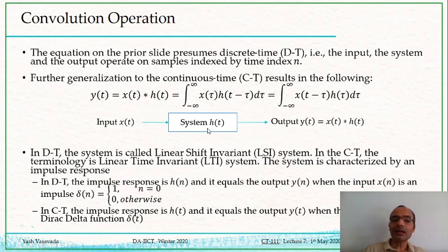Okay, now just some nomenclature. So in the discrete time, this system is called linear and shift invariant (LSI). And in the continuous time, the system is called linear and time invariant (LTI). Why it is linear, why it is called shift invariant, that maybe we will get into later.